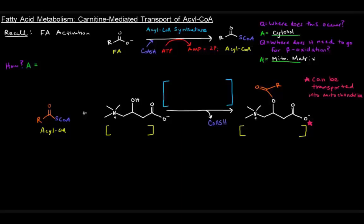If that's the case, then these acyl-CoAs upon activation have to somehow get into the mitochondrial matrix. Mitochondria are membrane-bound organelles with two membranes — an outer membrane and an inner membrane — and membranes are selectively permeable. So how do acyl-CoAs actually get into the mitochondrial matrix to be broken down via beta-oxidation? The answer is carnitine-mediated transport of acyl-CoA.